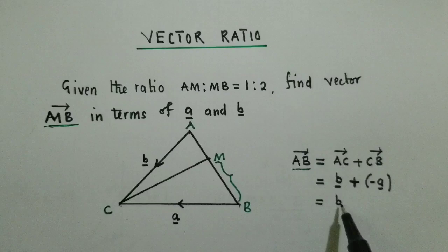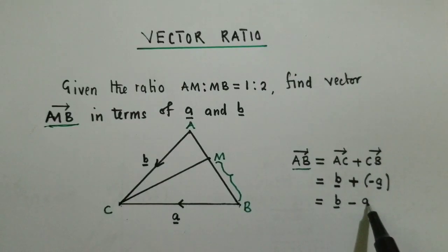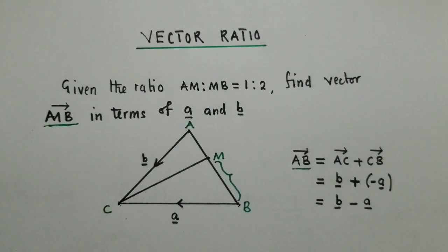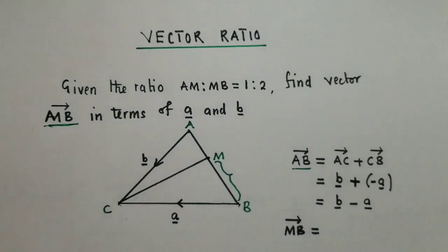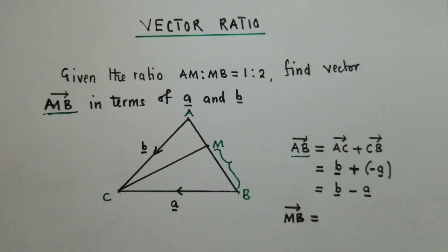So we simplify this, and we have found our vector AB. Now, we go to what you've been asked, which is vector MB. So how do we find vector MB? This is where it calls for the ratio.